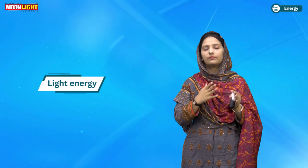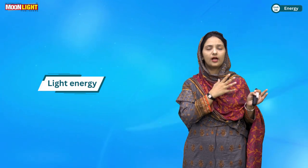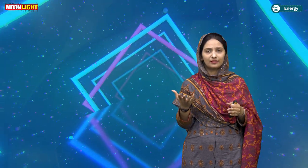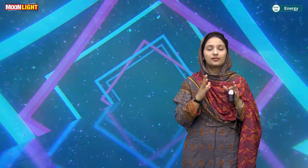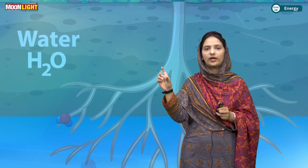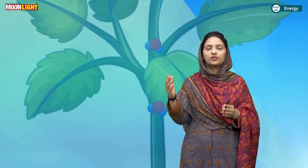The next energy form is light energy. Light energy can come from different sources. Its natural source is sunlight — the energy that comes from the sun is a natural source of light energy. There are also artificial sources of light energy. Light is used in different forms; for example, in photosynthesis, light energy is used by plants.